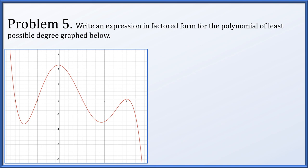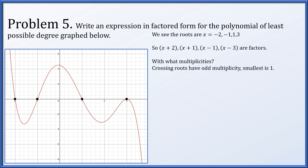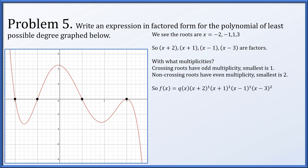Problem 5 is similar: write a factored form expression for the polynomial whose graph is given. We see roots at x = −2, −1, 1, and 3, giving factors (x + 2), (x + 1), (x − 1), and (x − 3). Crossing roots have odd multiplicity — we use the smallest, multiplicity 1. Non-crossing roots have even multiplicity — the smallest is 2.